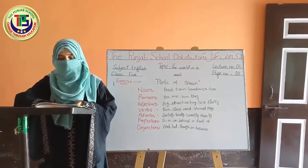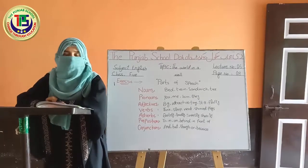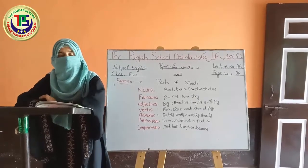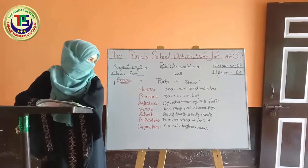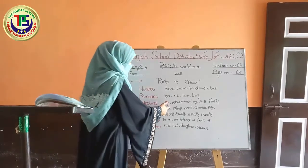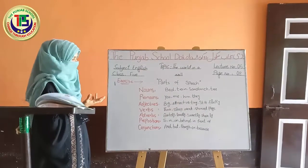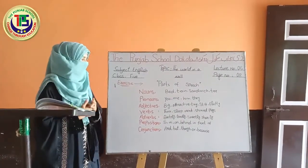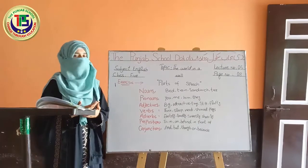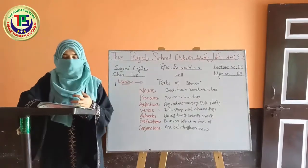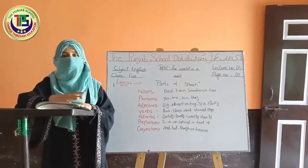Next is adjective. An adjective is a word or part of speech that describes the qualities of a thing or a person. یعنی کہ adjective میں کسی چیز کی خوبی یا خامی کو بیان کیا جاتا ہے۔ اس کی example دیکھیں: big, attractive, teeny, stiff, and fluffy — یہ ساری words adjectives ہیں۔ کسی چیز کا big ہونا، attractive ہونا، stiff ہونا، fluffy ہونا — یہ سارے adjective میں آتے ہیں۔